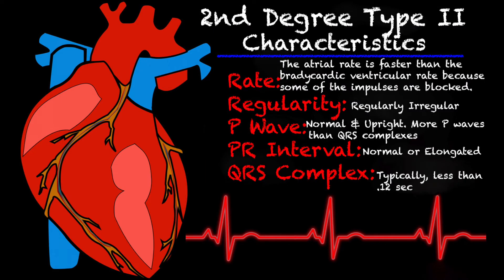Starting with the rate: the atrial rate is faster than the ventricular rate, which tends to be bradycardic because some of the impulses are blocked. The regularity is regularly irregular — it is an irregular rhythm, but there is some method and regularity to it. Your P waves are normal and upright, but there are more P waves than there are QRS complexes because the impulses are blocked. Your PR interval is typically normal, but it can be prolonged or elongated. And your QRS complexes are less than 0.12 seconds, but in some Mobitz 2 heart blocks they can be very wide.